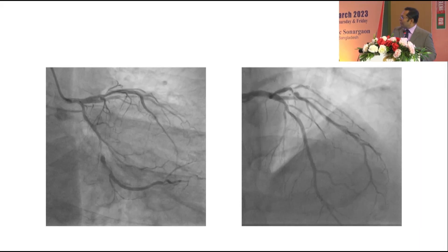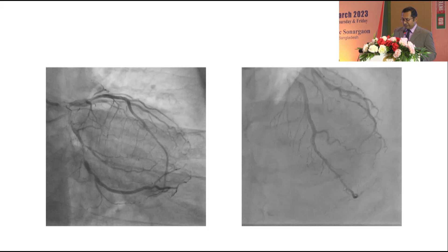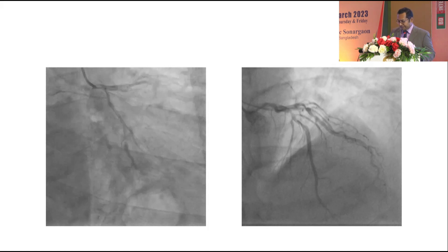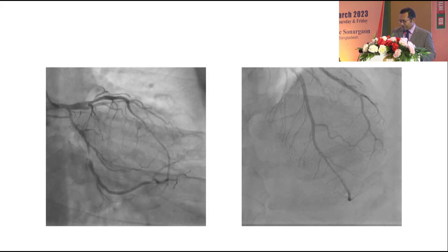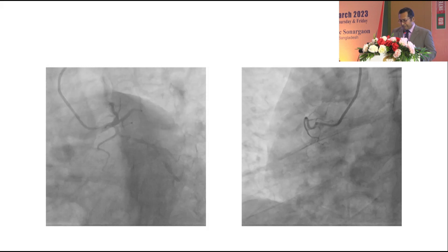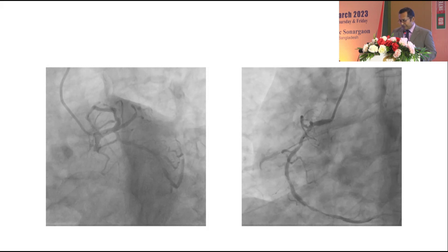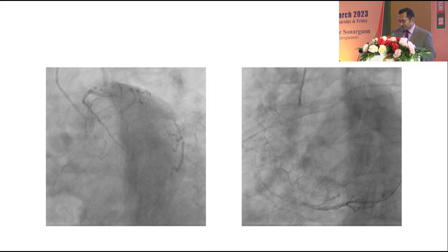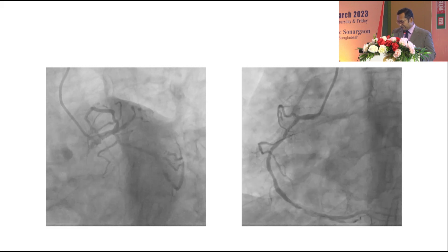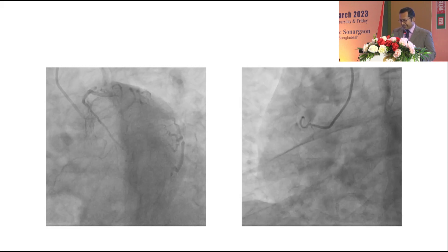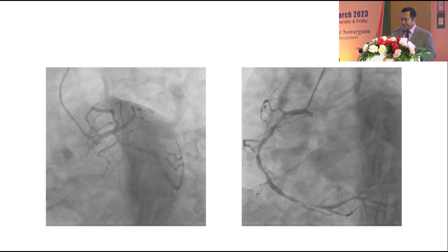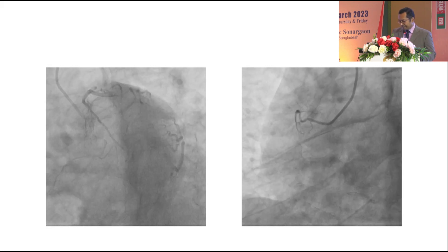When we planned for the angiogram, we found a critical lesion in the distal LCX. The LAD proximal had minor plaque, but the RCA also had a critical lesion in the distal segment. So we labeled it as double vessel disease and planned for stenting to the LCX and RCA.